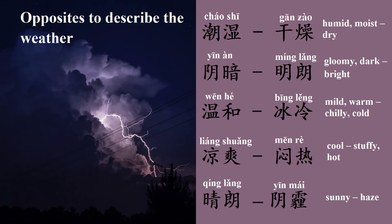The opposite of 阴暗 is 明朗, bright. 温和, mild, warm. The opposite of 温和 is 冰冷, chilly or cold. 凉爽酷, cool. The opposite of 凉爽酷 is 温热, stuffy or hot.